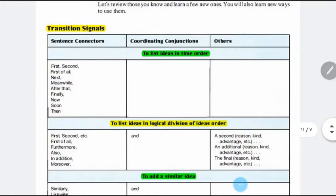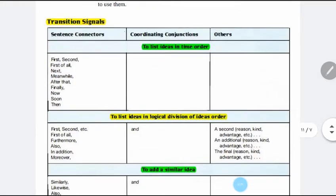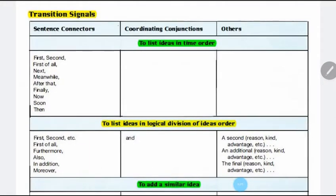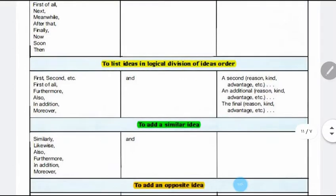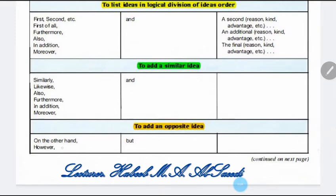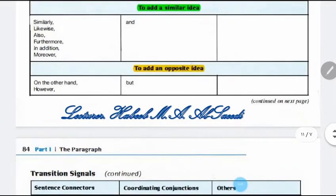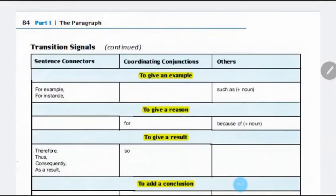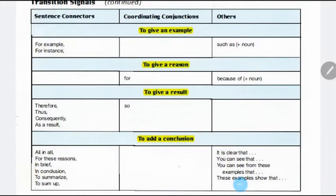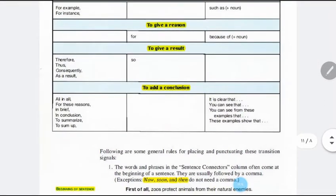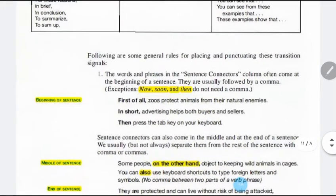Here we have tables of transition signals — very important to memorize and use. To list ideas in time order, use: first, second, third, next, meanwhile. To list ideas in logical division, use: first, second, first of all, furthermore, also. To add similar ideas, use: similarly, likewise, also, furthermore. To add an opposite idea, use: on the other hand, however. To give an example, use: for example, for instance, such as. Memorize these tables — they are very important and help make your writing very easy to read and understand.